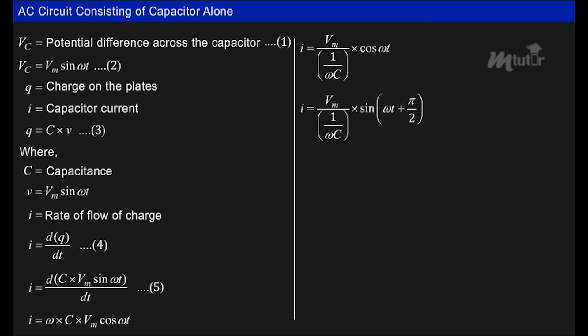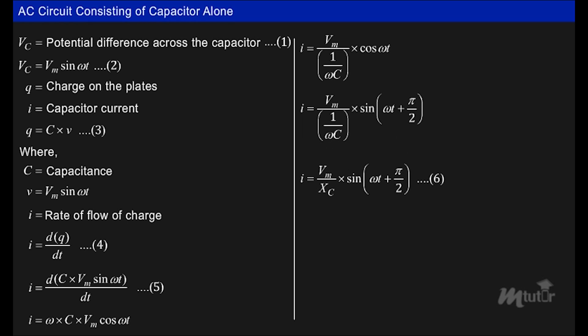We know that 1/ωC is the capacitive reactance Xc. Therefore, the expression for current can be rewritten as i = (Vm / Xc) · sin(ωt + π/2), which further reduces to i = Im · sin(ωt + π/2).